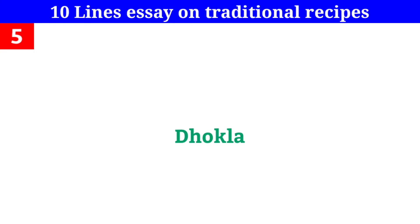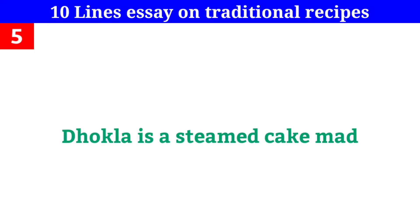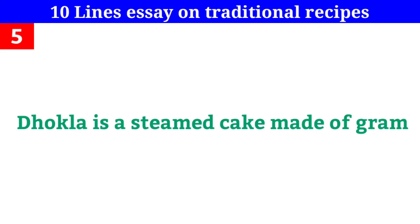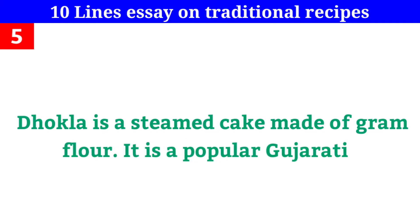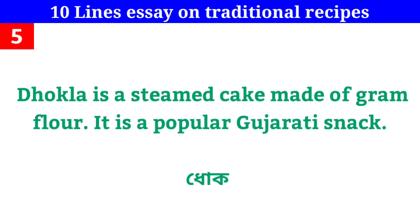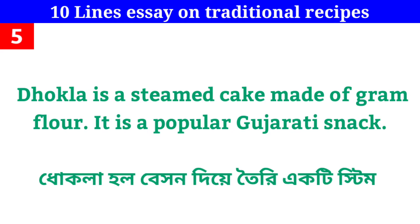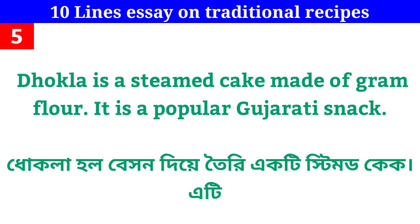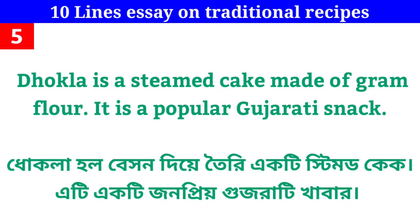Point 4: Dhokla is a steamed cake made of ground flour. It is a popular Gujarati snack.